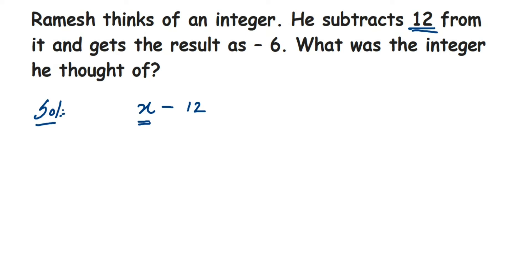After subtracting 12 from the integer, he gets the result as -6. This means if we subtract 12 from x, we get the answer -6. What is this integer? We have to find out. You can see here we have got an equation.